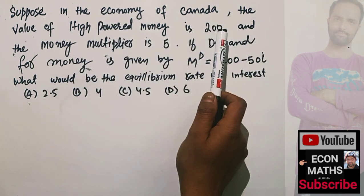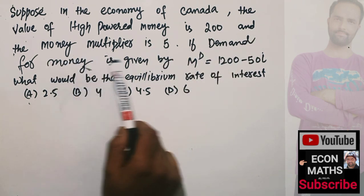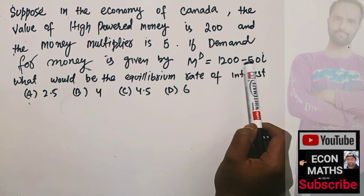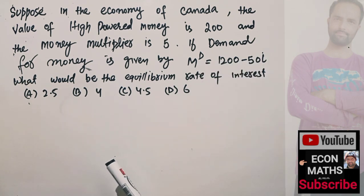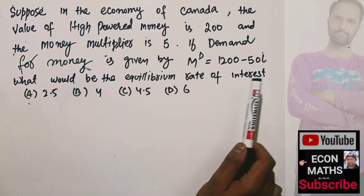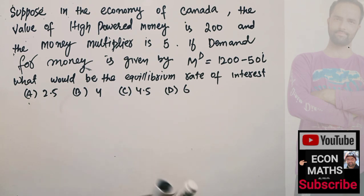The value of high powered money is 200 and the money multiplier is 5. If demand for money is given by Md = 1200 - 50i, where i denotes the rate of interest, we need to find the equilibrium rate of interest. The options are 2.5, 4, 4.5, or 6.